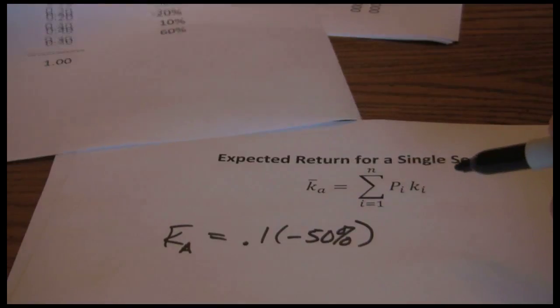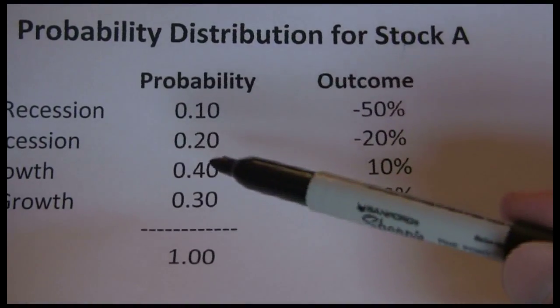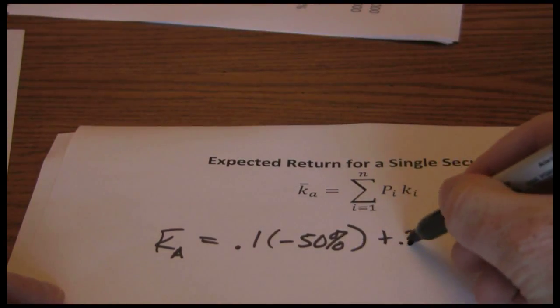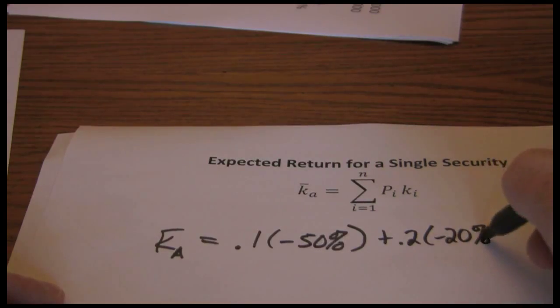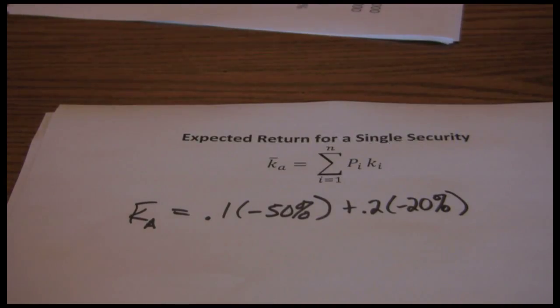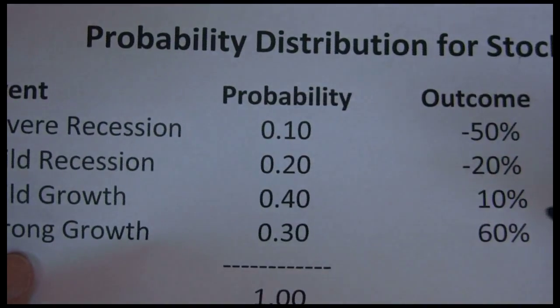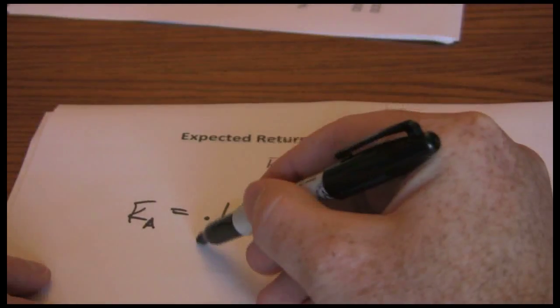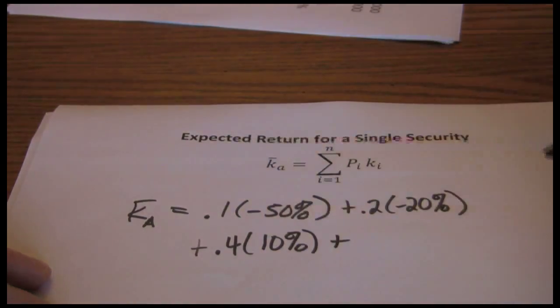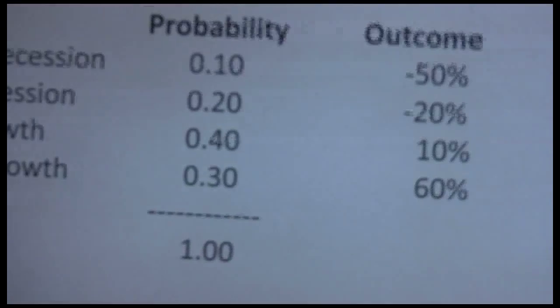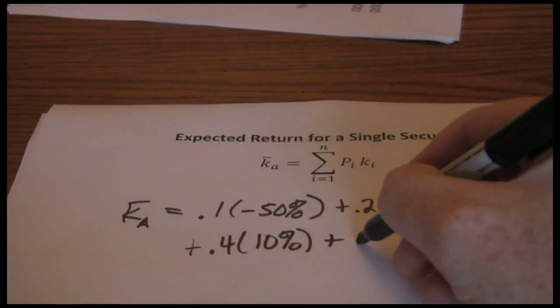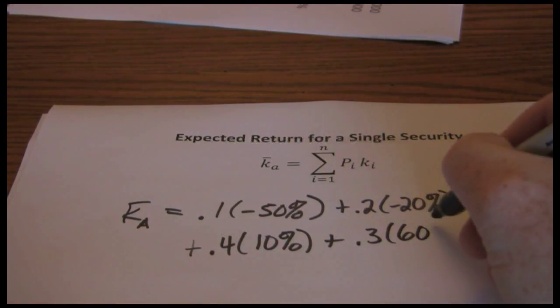Then we go to our second scenario, .2 probability, negative twenty percent. Go on to our third outcome, .4 probability times ten percent. And then finally our fourth outcome, .3 probability, sixty percent return.